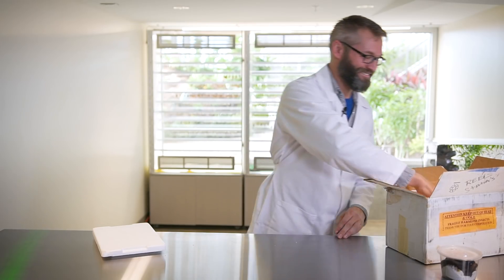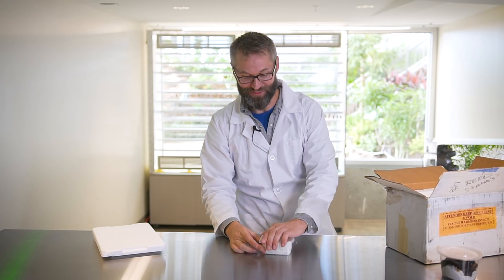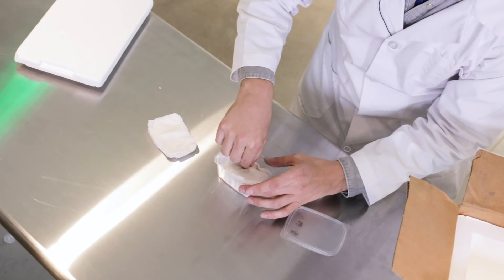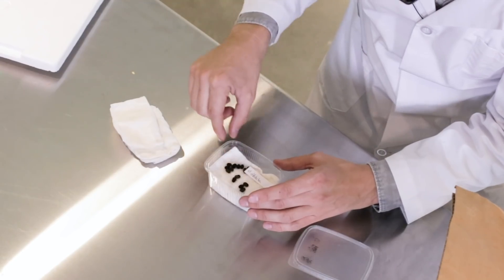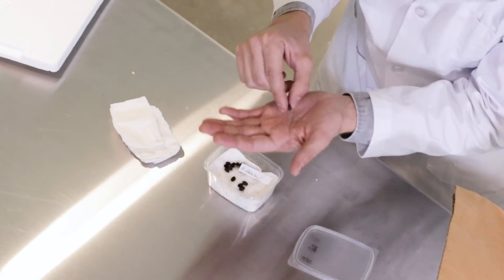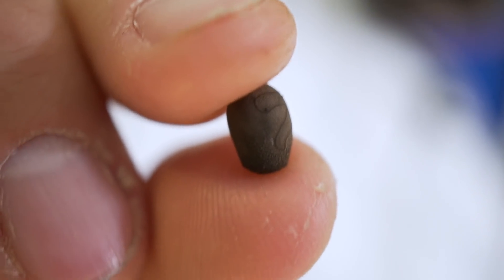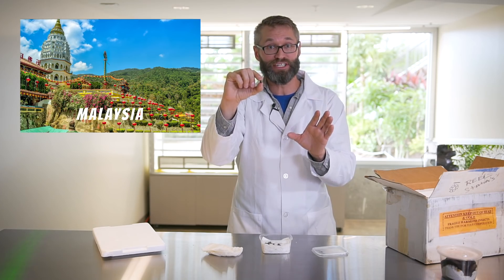Okay, let's see what else we've got. I think I know what these are. Wow. That is insane. Check this out, you guys. That is the egg of a jungle nymph. That's a type of walking stick that comes from Malaysia.